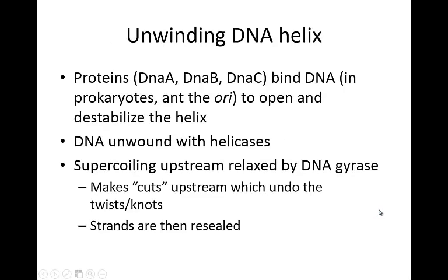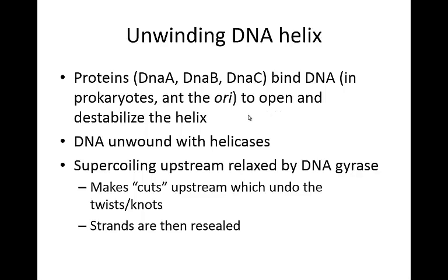The very first thing you need to be able to do is unwind the DNA helix. There are a number of different proteins — we call them single-stranded DNA binding proteins — that will bind DNA. In prokaryotes, they bind at the ori, or the origin of replication, and their job is to open up and destabilize the helix. The DNA is actually unwound with proteins called helicases. Upstream of where you have the DNA, it might become supercoiled, and we don't want that to happen. So it's relaxed by a protein called DNA gyrase, which makes little cuts upstream to undo the twists or knots, and then the strands are resealed, releasing the upstream tension.